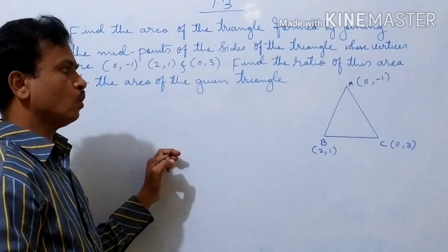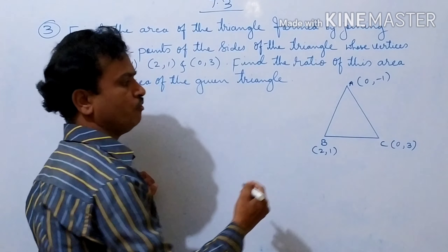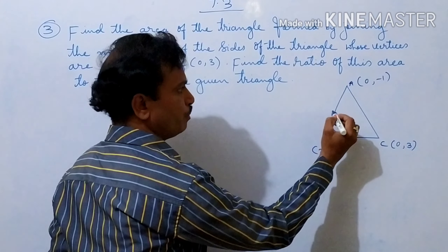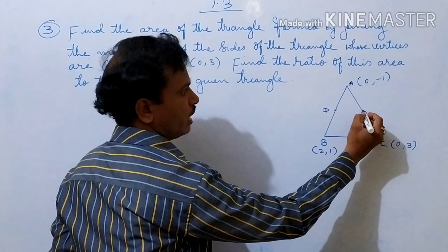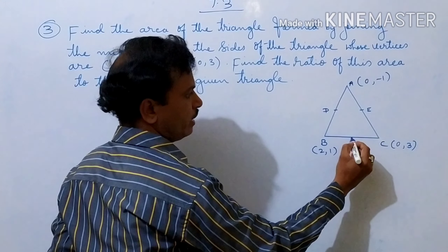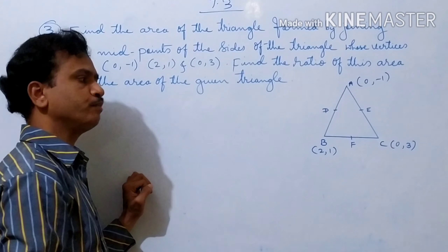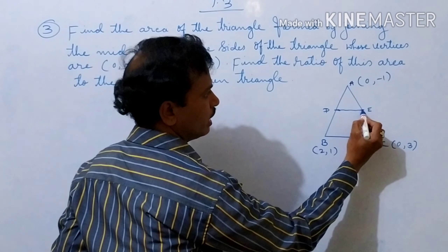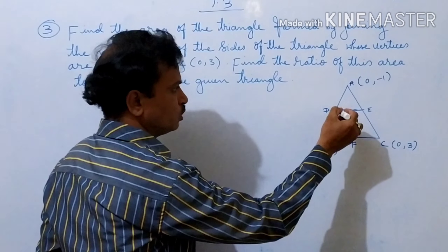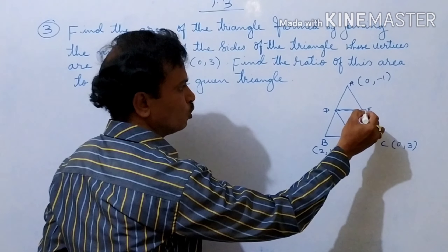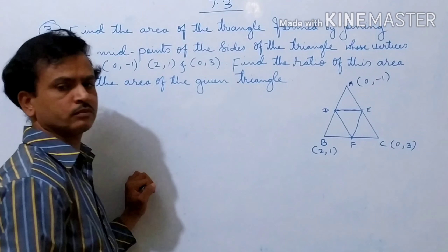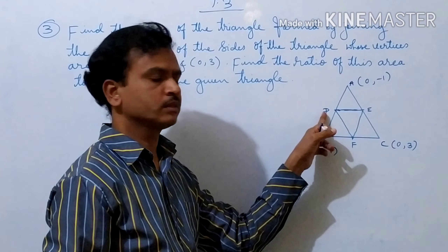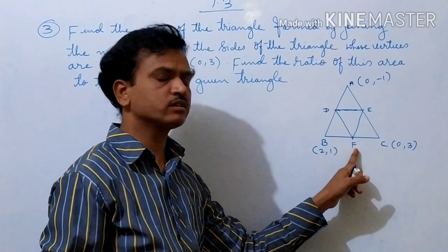Now, joining the midpoints of triangle ABC — what is the midpoint of AB? Here you should take midpoint D, then midpoint E, then midpoint F, which is the midpoint of BC. Join DE, then join DEF, join EF. Now first we should find the coordinates of point D, point E, and point F.